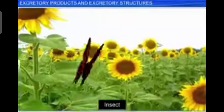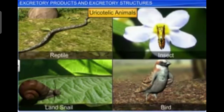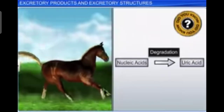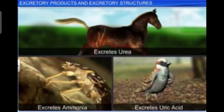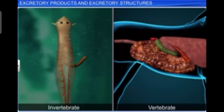A survey of the animal kingdom presents a variety of excretory structures. In most invertebrates these structures are simple tubular forms, whereas vertebrates have complex tubular organs called kidneys. Protonephridia or flame cells are the excretory structures in platyhelminthes, i.e. flatworms such as planaria, rotifers, some annelids, and the cephalochordate Amphioxus.